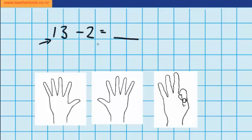Now the question says I need to take away two fingers so that will involve folding down two fingers. Can you see how many fingers I'd have left?